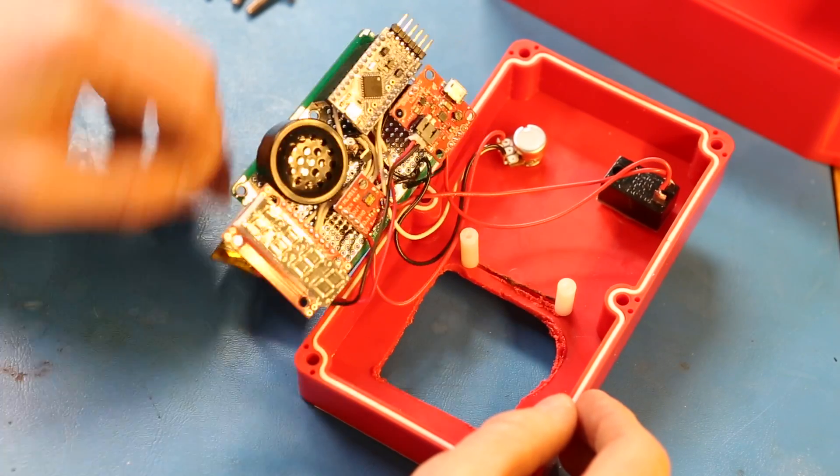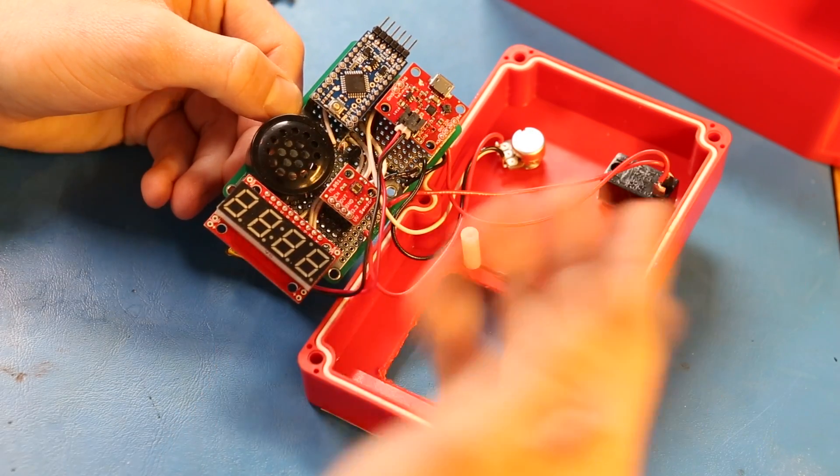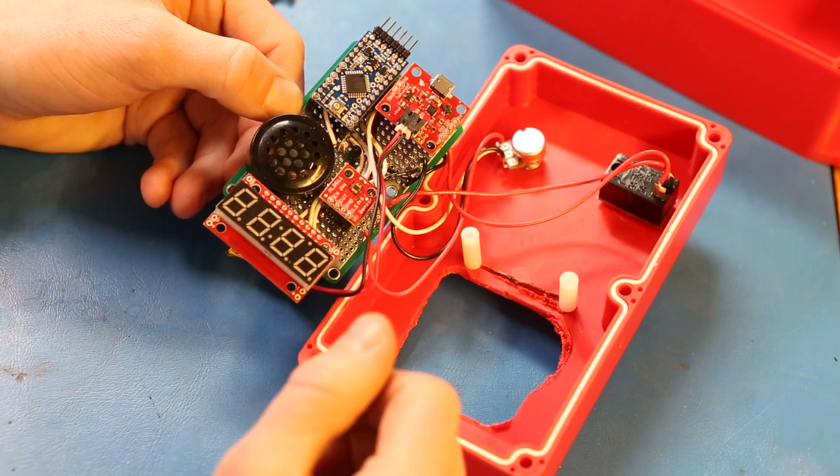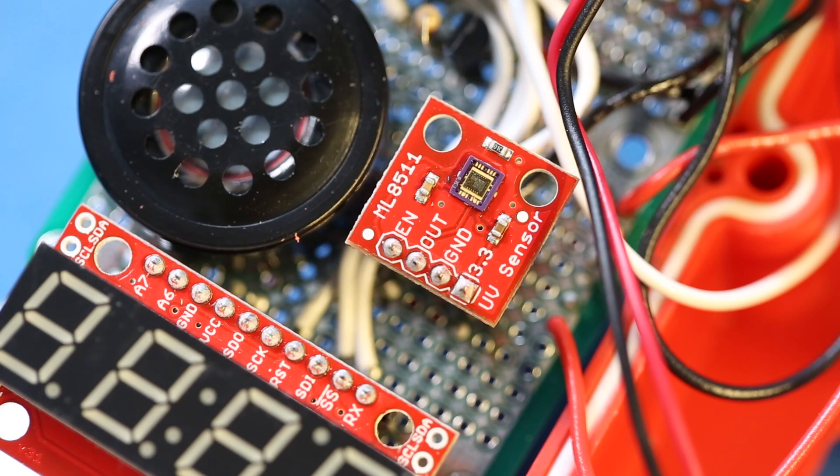We have a LiPo powering the whole device that goes through our power cell. That way you can charge the LiPo as well. This is powering an Arduino Pro Mini that takes readings from the UV sensor.